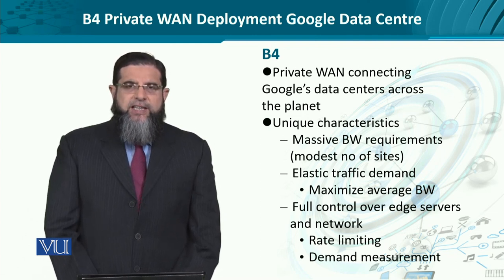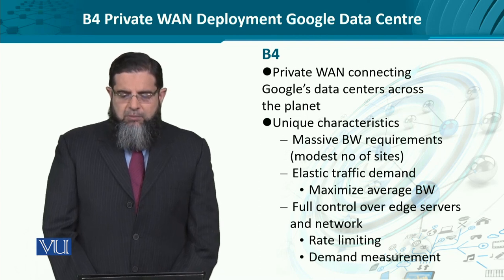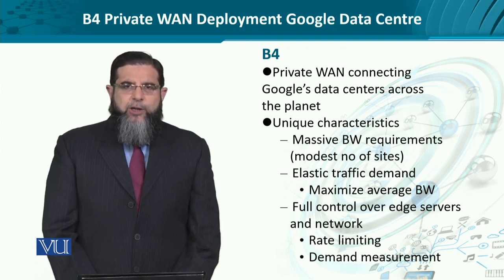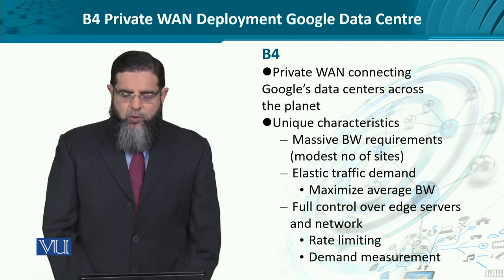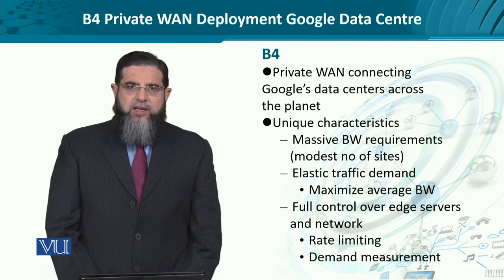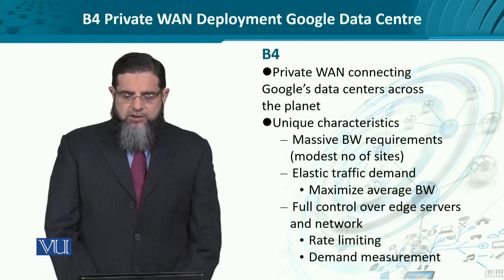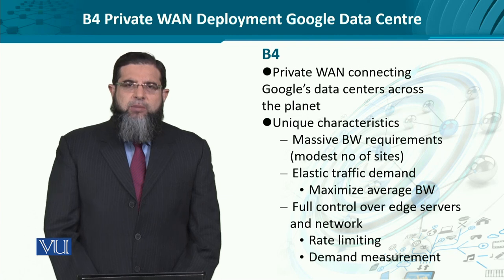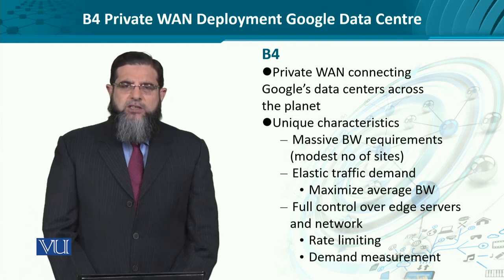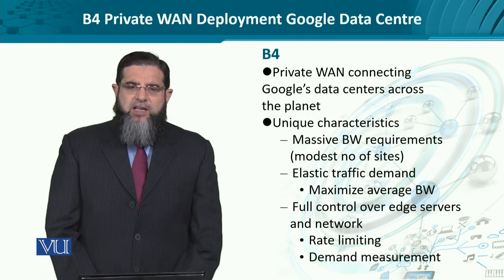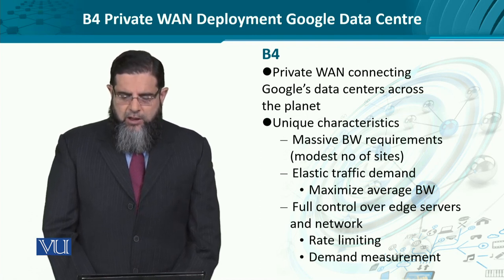B4 was basically an initiative by Google to provide WAN connectivity to its own data centers. The requirements laid out by Google were quite unique. The first one was a massive bandwidth requirement for a modest number of sites — specifically, back in 2011, they had 12 sites globally.